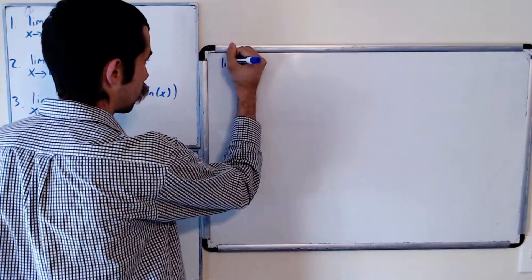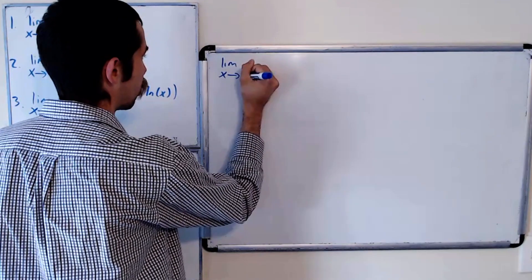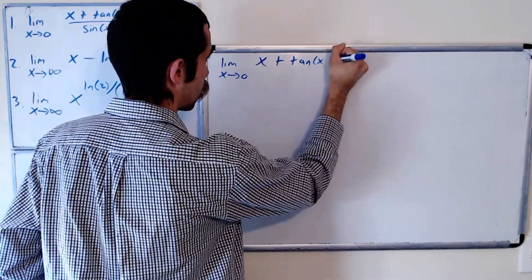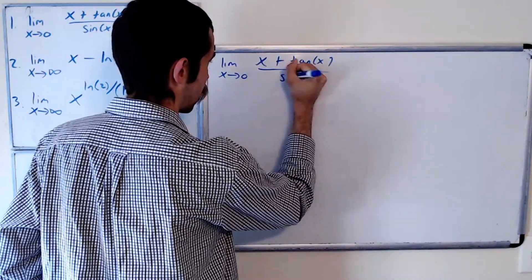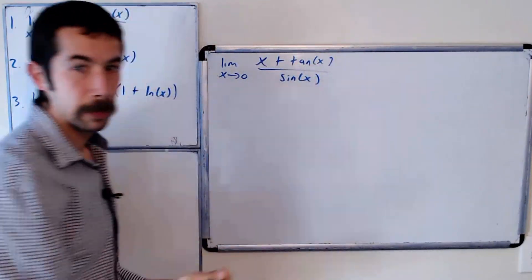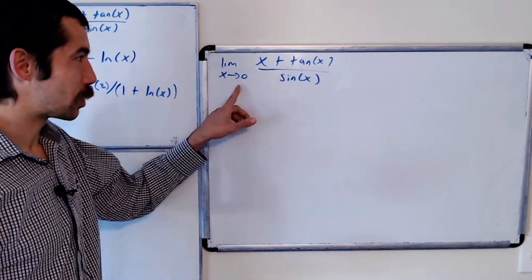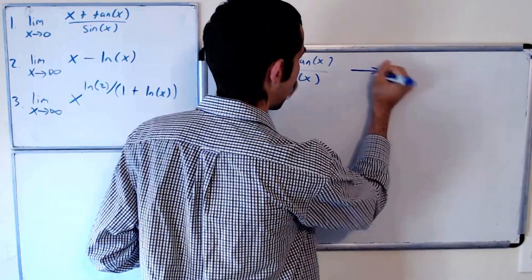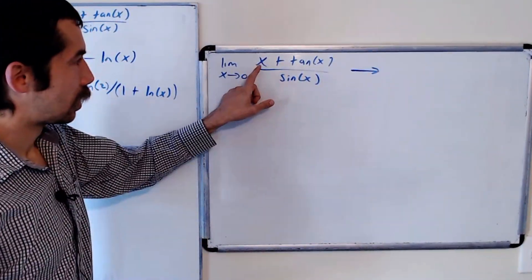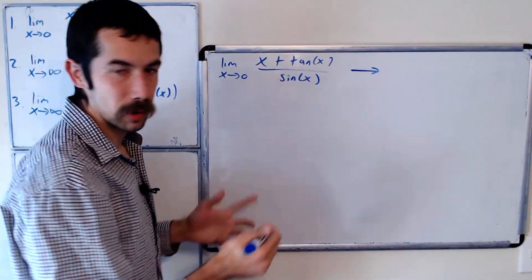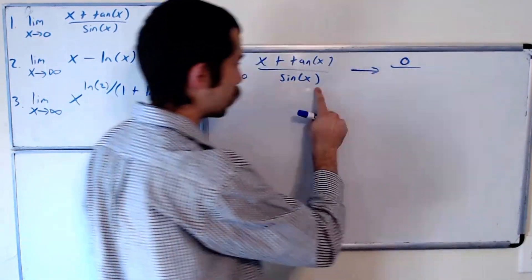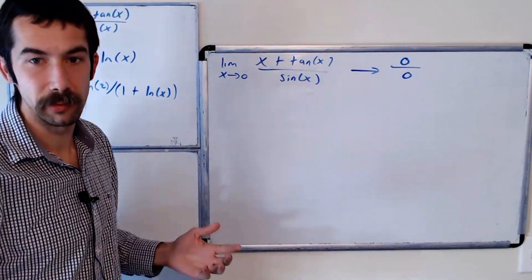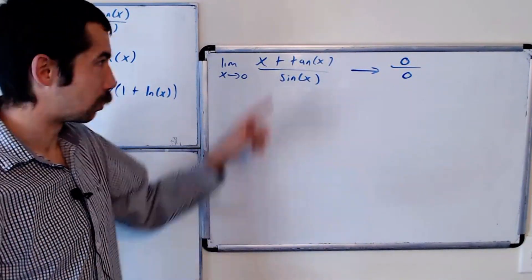This is the limit as x goes to zero of x plus tangent of x over sine of x. The first thing you should do is just try to plug in x equals zero and see what happens. We would get zero plus tangent of zero, which is zero, over sine of zero, which is also zero. So we're clearly in indeterminate form, so we could use L'Hopital's rule.